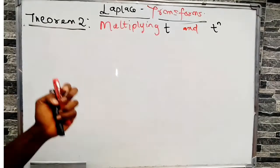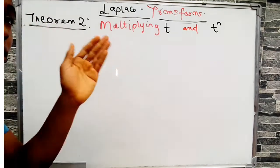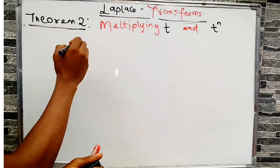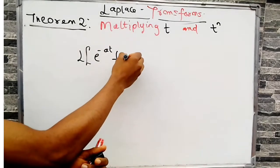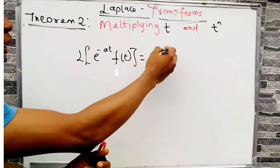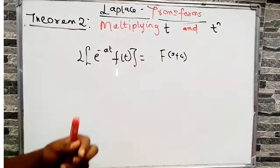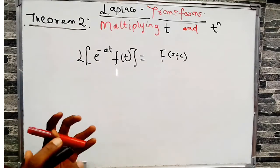Welcome back to my YouTube channel. On the last video we covered how to get the Laplace transform of a function when it is multiplied by the exponential of minus at, which we call the first shift theorem. We showed that the Laplace of e^(-at) times f(t) gives F(s+a), and we proved this using the standard method for Laplace transformation.